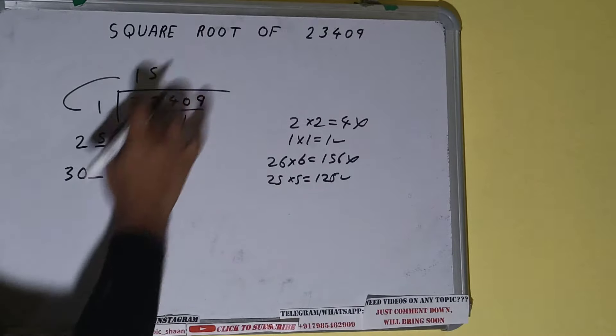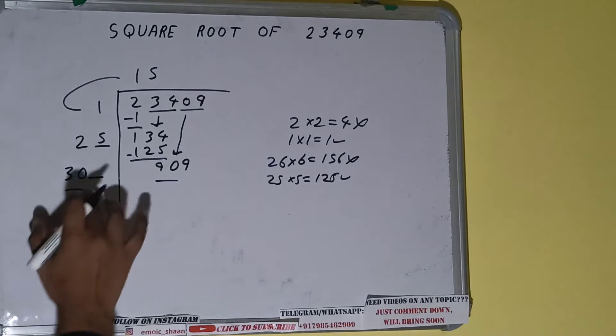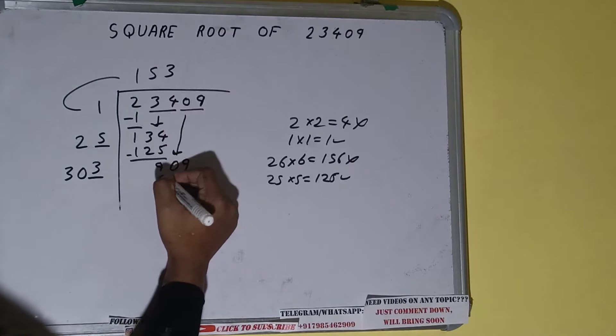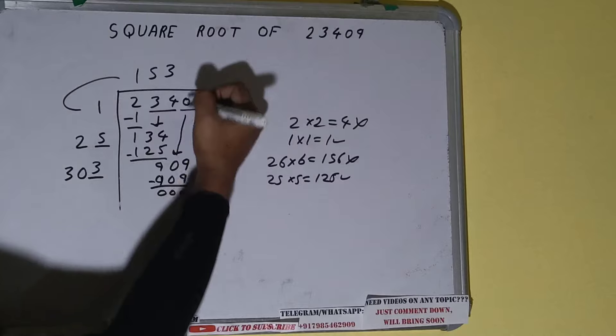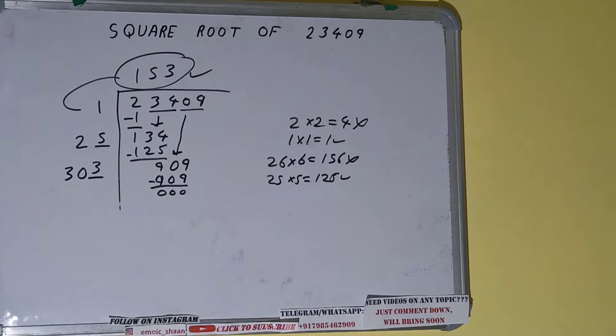Now whatever number we write here, we have to write here also. So we can compare this 30 with this 90. 3 times 3 is 90, right? So three times it will work. So three here and three here, 909 subtract and we'll be left with zero. Once we get zero, whatever is in the question will be the answer, that is 153.